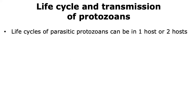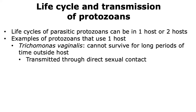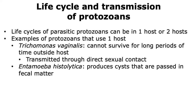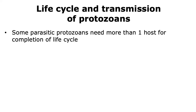Parasitic protozoa are able to complete their life cycle in either one host or multiple hosts. For example, Trichomonas vaginalis is able to complete its life cycle using only one host. Trichomonas vaginalis is transmitted through direct sexual contact, and it cannot survive for longer periods of time outside the host. Similarly, Entamoeba histolytica, which causes amoebiasis, is also able to complete its life cycle in one host. Entamoeba histolytica produces cysts that are passed in the fecal matter of the infected individual, and transmission from one individual to another is usually through the consumption of contaminated food or water containing these cysts.